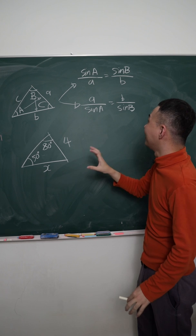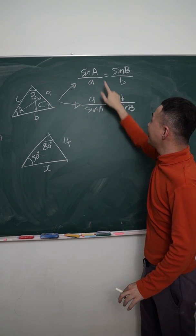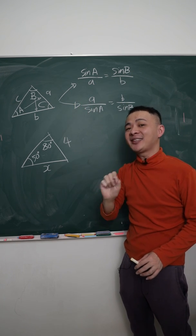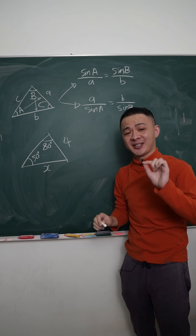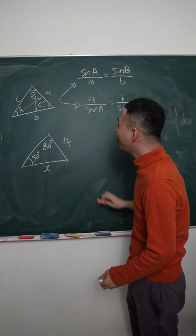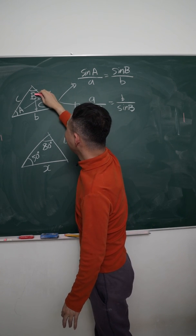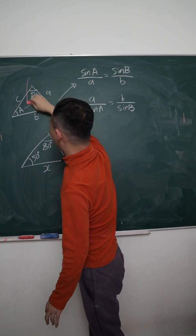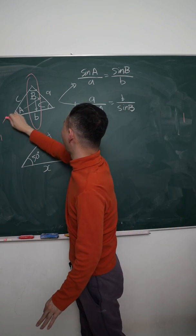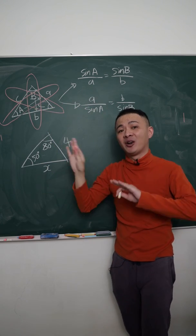If I want to find the angle, I will use the first one. If I want to find the length, I will use the second one — basically I just flip over the angle. To use the sine rule, you must have one combination: an angle and its opposite length. It can be capital A with small letter A, or capital C with small letter C.